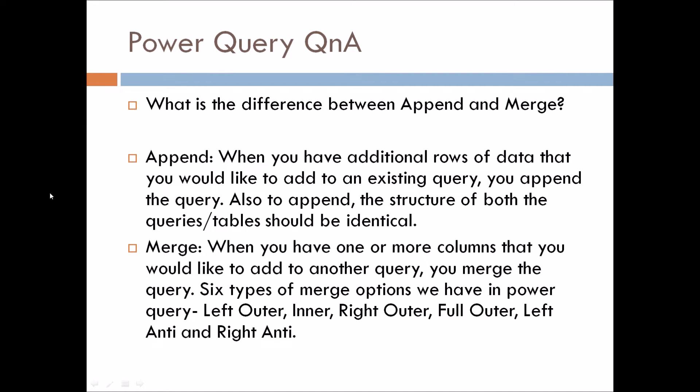Now, what is Merge? Merge is basically a combination of two tables on the basis of some common column names or values. So whenever we want to add one or more columns from one query to another, we merge the queries. The interviewer can also ask: what are the different types of merges available in Power Query? There are six types of merge options available: Left Outer, Inner, Right Outer, Full Outer, Left Anti, and Right Anti.